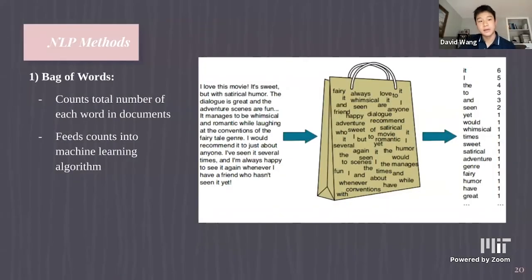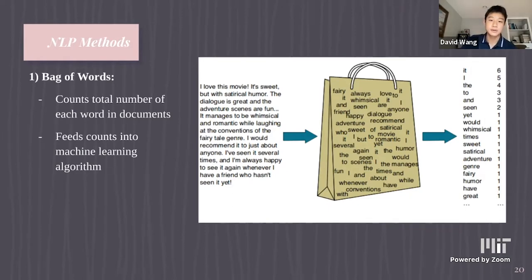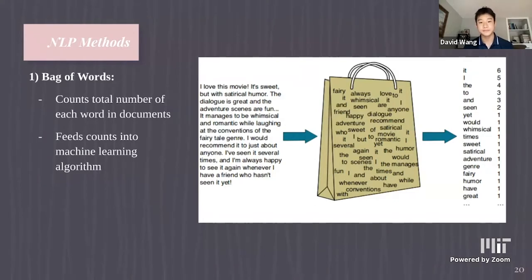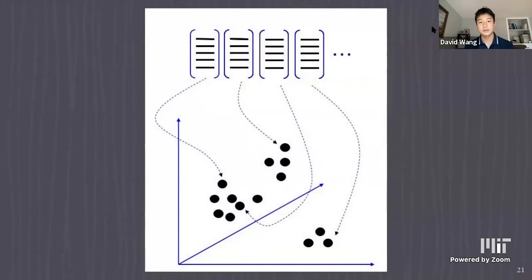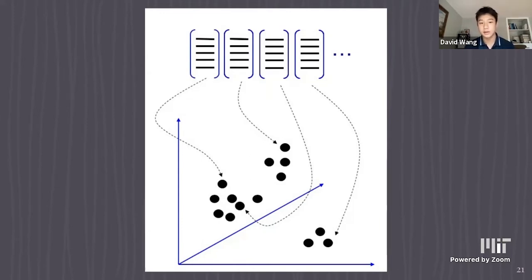There are two primary NLP methods. The first is bag of words — it takes a document and creates a bag of every word with an associated count of how many times it appears. By graphing a number associated with each unique word on the x-axis and its frequency on the y-axis, a machine learning algorithm can separate those words into different categories.